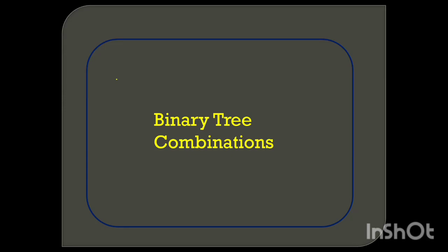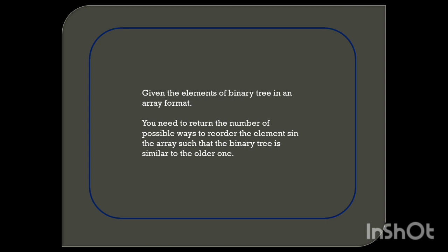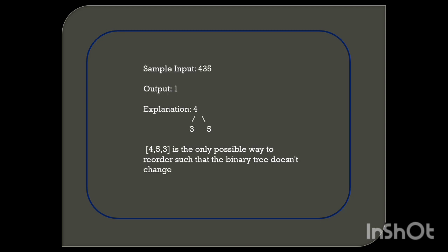Hello friends, today we will discuss the binary tree combination code. This is the latest Accenture exam coding question. They give us a binary tree in array format and we need to return the number of possible ways to reorder the elements such that the binary tree is similar to the original one. The output should be printed as 1 if it is a valid binary tree, and 0 if it is not.